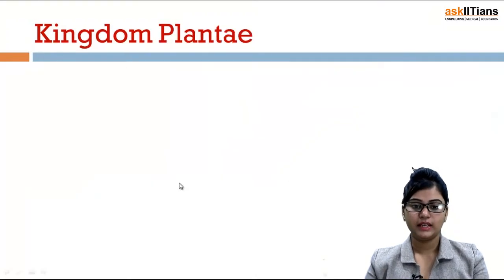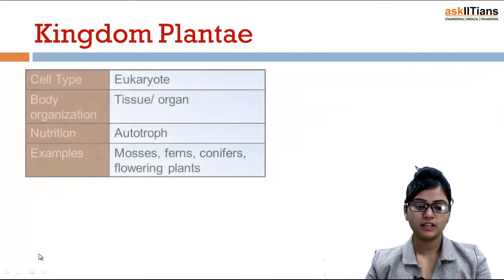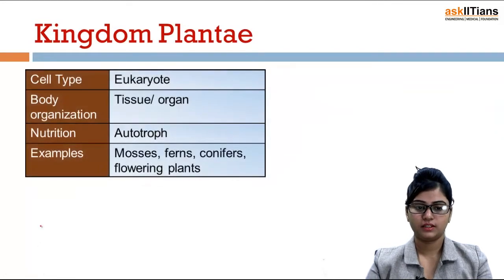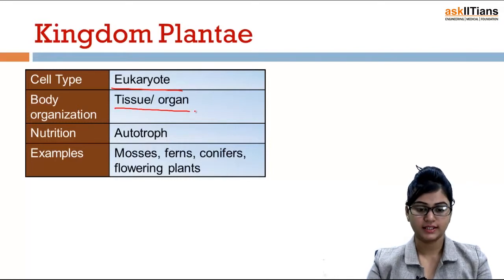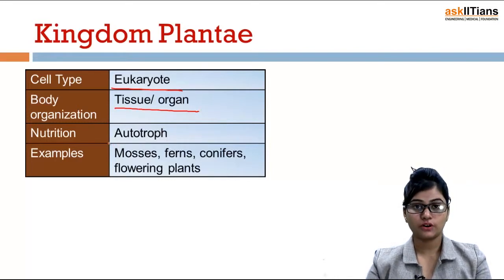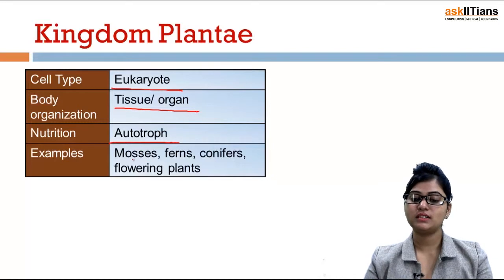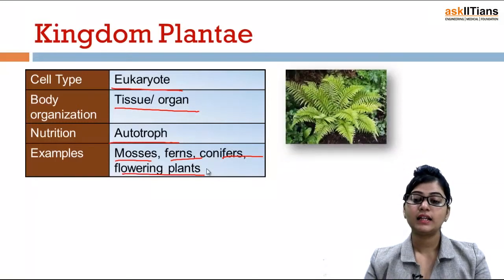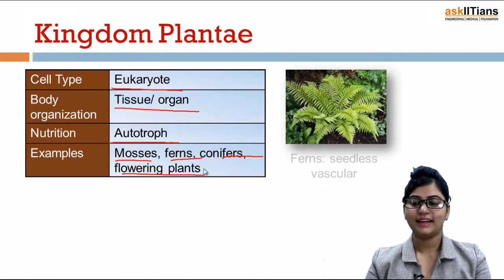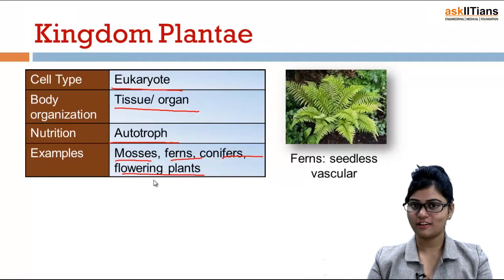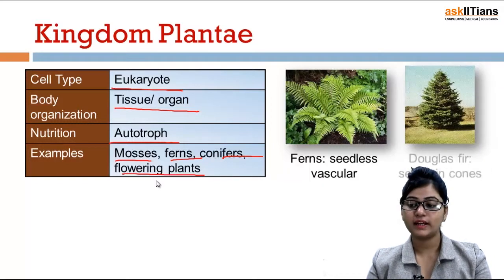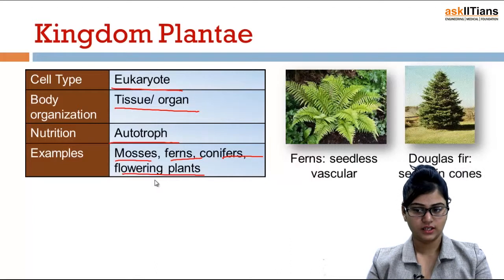Kingdom Plantae has a cell type of eukaryote. Body organization is tissue or organ, and nutrition is autotroph. Examples include mosses, ferns, conifers, and flowering plants. These are ferns — the seedless vascular plants. And this one is a Douglas fir, which has seeds in cones.